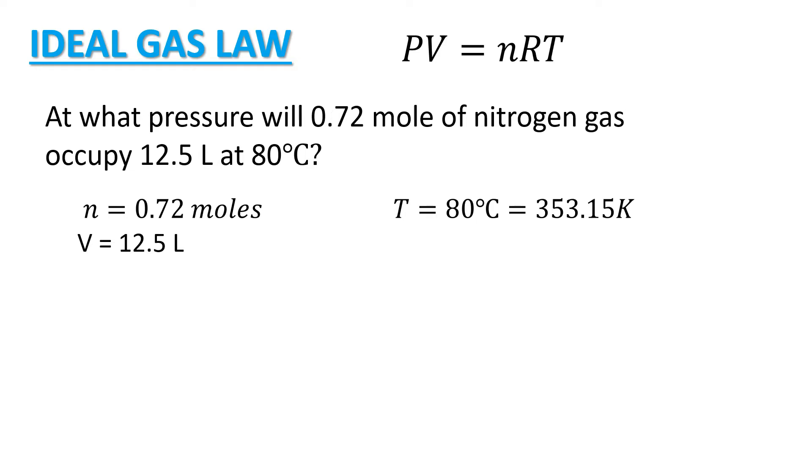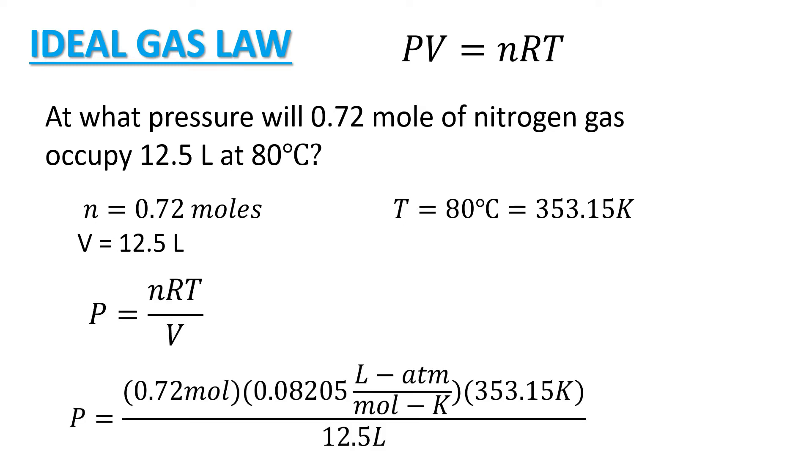And since we are using moles, liters and Kelvin, and we are asked for the pressure, we can actually use the value for R equal to 0.08205 liter atmosphere per mole Kelvin. So from the formula, we can derive the formula for pressure equal to nRT over V.